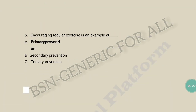Encouraging regular exercise — is this an example of primary, secondary, or tertiary prevention? If we encourage someone to do regular exercise so that they can prevent many diseases and their body can maintain its normal physiology, this is an example of primary prevention.